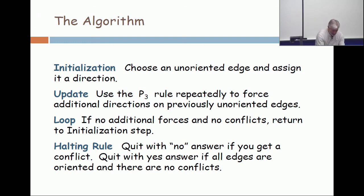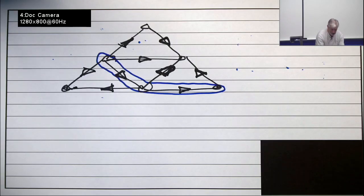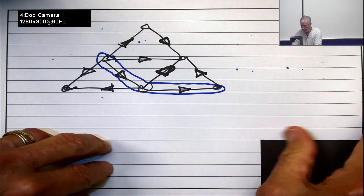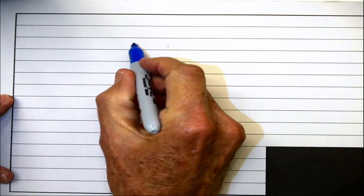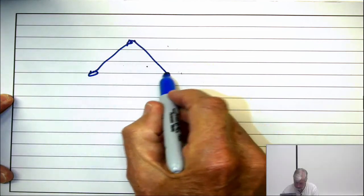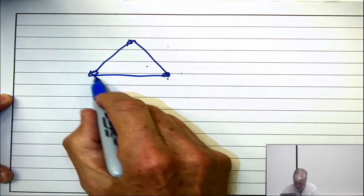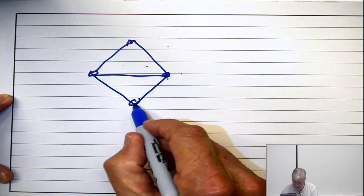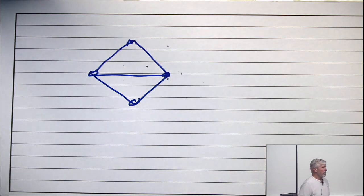All right, let's take a little example, and this is surprisingly complex even though it's very, very little. Here's the graph, and I ask, is that a comparability graph? Yes or no?